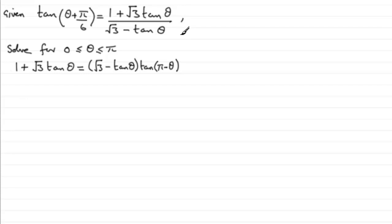And we're told to, hence or otherwise, solve for theta between 0 and pi inclusive this equation. Now, that means how are we going to relate this equation to what we're given?